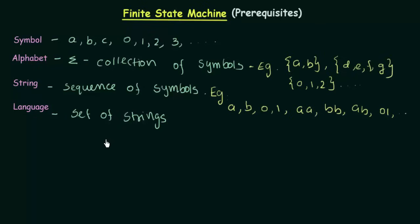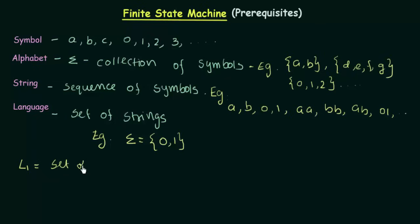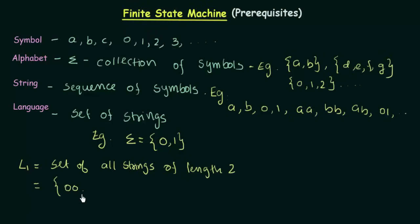This will become clear with examples. Let's say the alphabet Sigma is {0, 1}. Now let's define some languages over this alphabet. Language L1 is the set of all strings of length 2. Over the alphabet {0, 1}, those strings would be: 00, 01, 10, and 11. These are all the strings of length 2 over the alphabets 0 and 1.